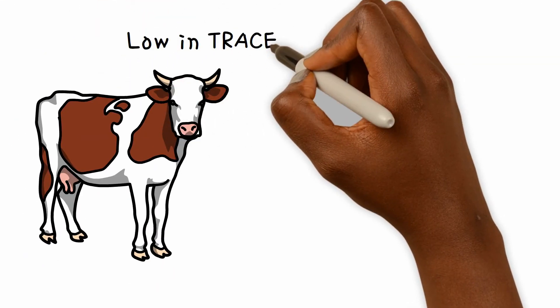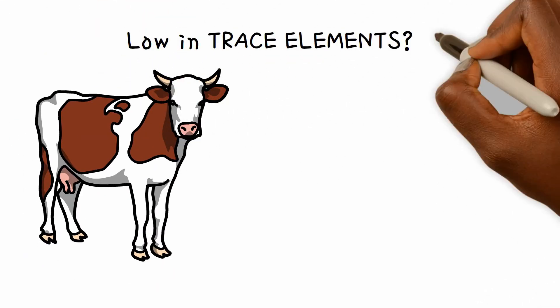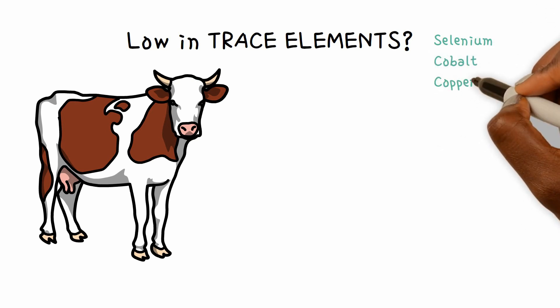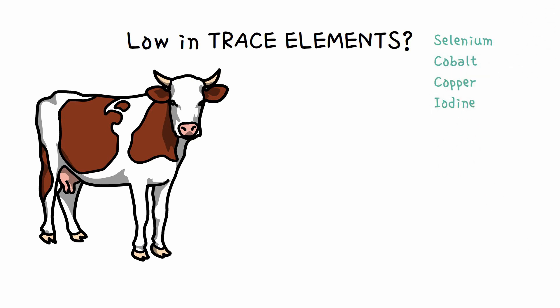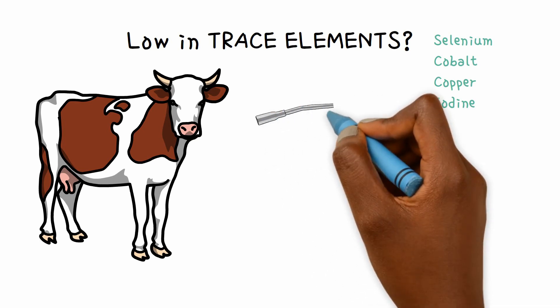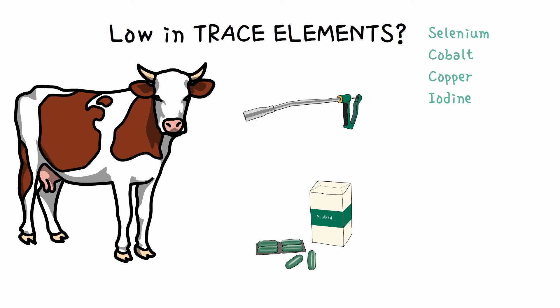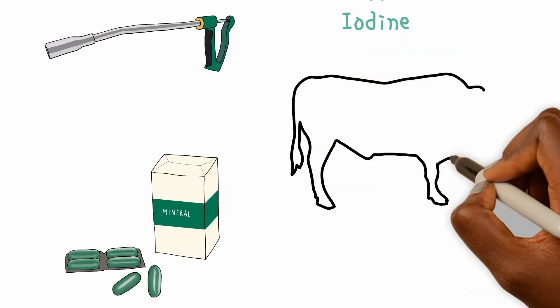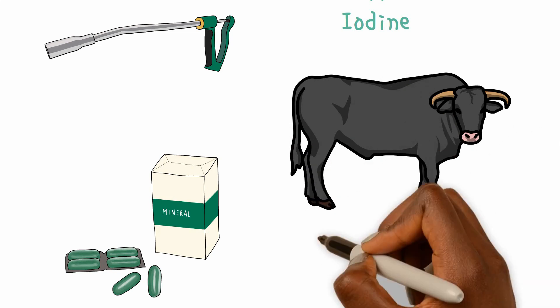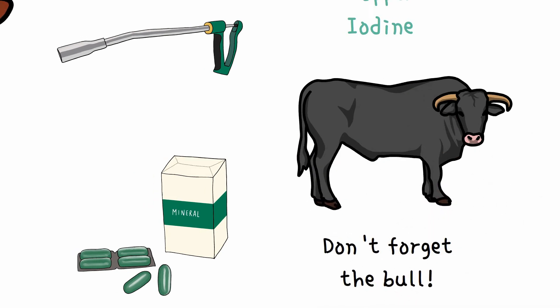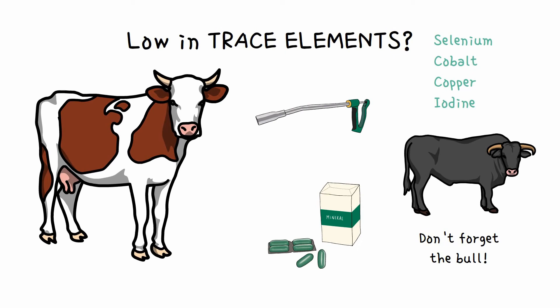Even if cows are well fed, if they are low in trace elements such as selenium, cobalt, copper, or iodine, then they will be less fertile. Establishing these levels may or may not be possible, but supplementation of deficiencies can improve fertility in a district. This is especially important when importing exotic genetics. Care should be used in supplementing with copper or general minerals. Do not forget to include the bull when supplementing cows with minerals, as bulls are important in getting cows in calf.